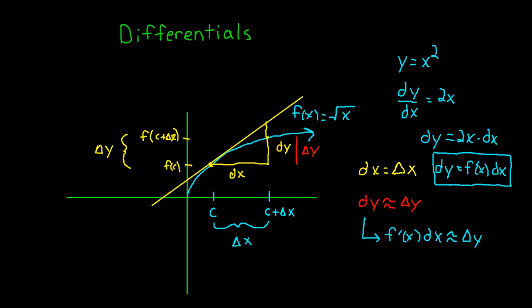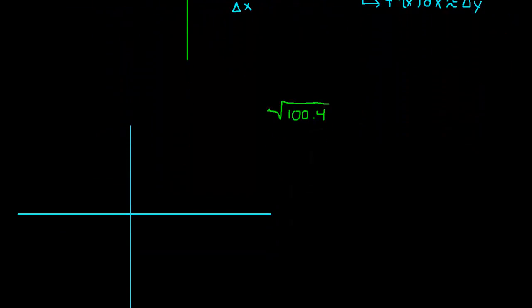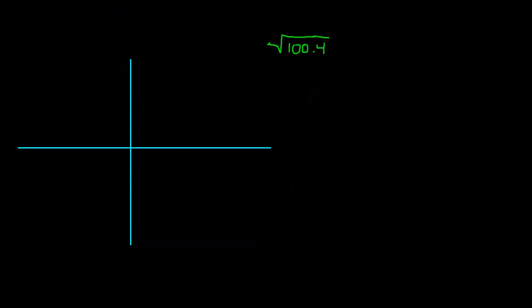Let's go ahead and scroll down here. Let's look at the square root of 100.4. Let's say that you wanted to know what the square root of 100.4 was and you didn't have a calculator. I know what you're thinking - it's 10 point something, and you're right. That would probably be a good enough approximation for 99% of people, but we want to make things more complicated than they are. So here we go.